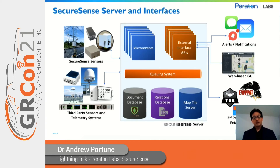The second element of SecureSense is the server, which takes in data from SecureSense sensors as well as third-party sensors, performs a range of different microservices which are easily extensible and customized for different applications, and flows data out through a range of external interface APIs to either our own web-based user interface or third-party platforms such as EWP, ATAC, or the Microsoft HoloLens. We also have the ability to send out alerts and notifications via SMS text messages or email.